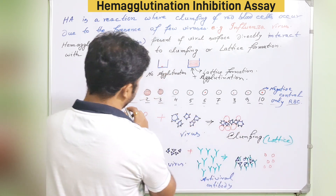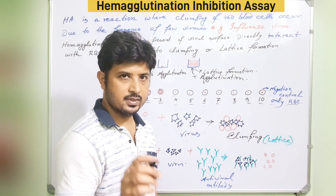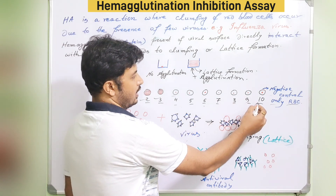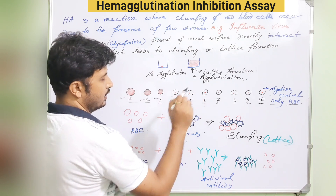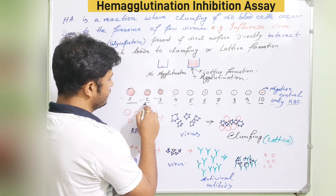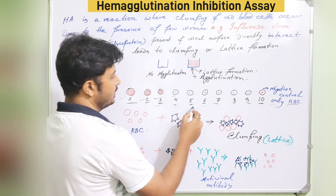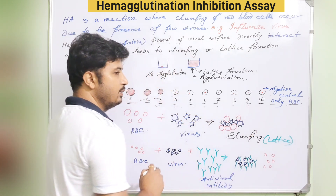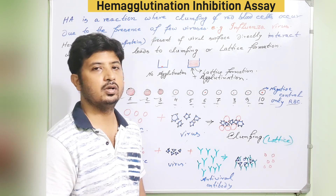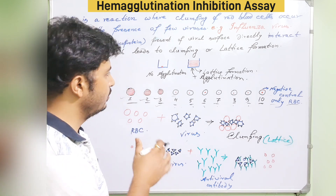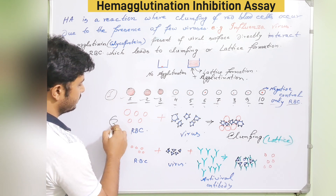Wells one through nine contain serially diluted patient serum, and well ten contains only RBCs. After incubation, you observe that wells one through three are positive for agglutination, while wells four through nine are negative — because the antibody is so diluted that it can no longer form a lattice with the antigen. This is the normal hemagglutination process.